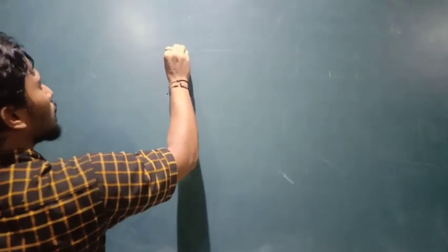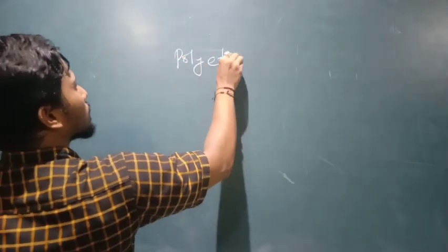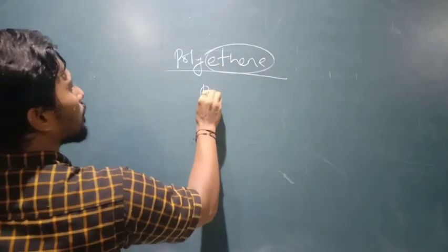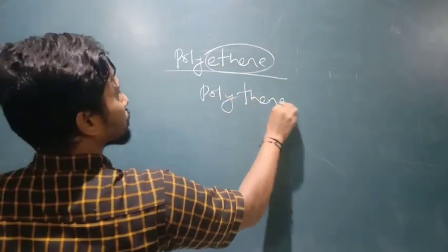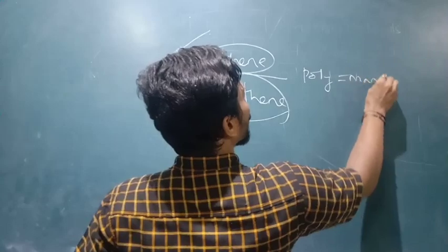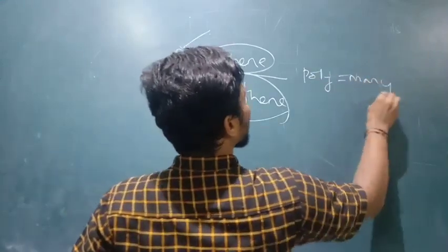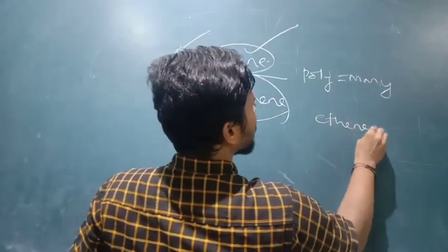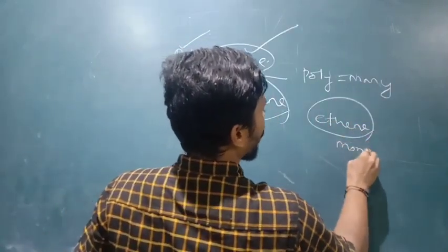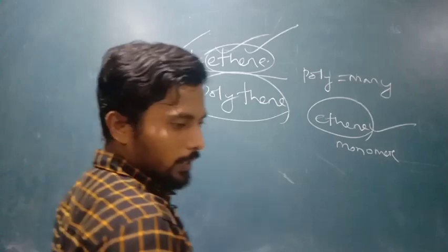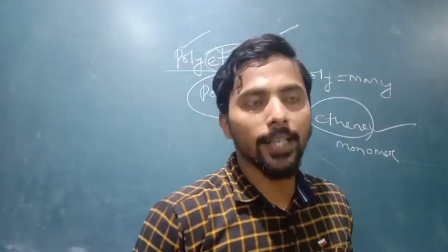Let's take the example of polythene. Polythene means many ethene molecules. What is ethene? Ethene is the monomer. What is polythene? Polythene is the polymer. So ethene is the monomer and polythene is the polymer. The polymerization process can be addition polymerization or condensation polymerization.